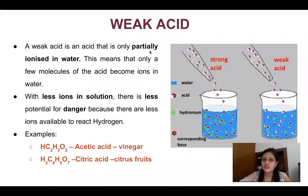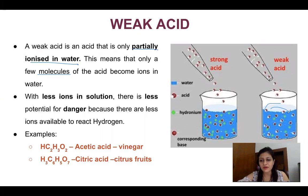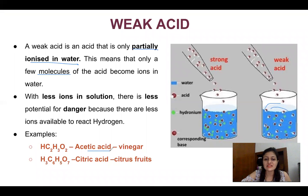A weak acid is not completely ionized in water, but only partially ionized. Some molecules remain as molecules and only some are converted into ions, so fewer ions are available to react, making them less dangerous. Examples of weak acids include acetic acid (vinegar, which we eat), and acids found in citrus fruits like tomato, lemon, and apple. So these are weak acids.